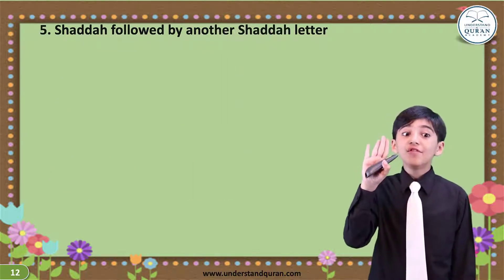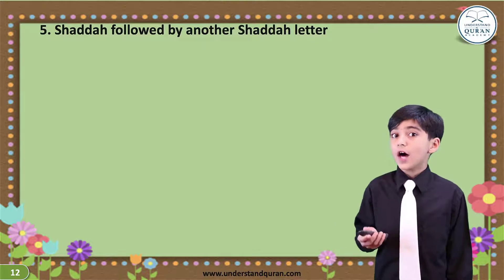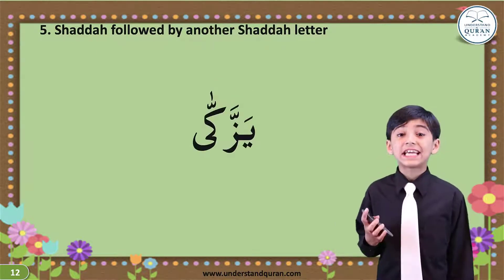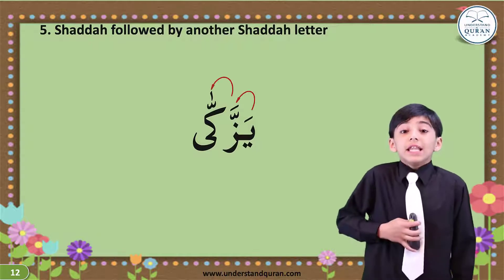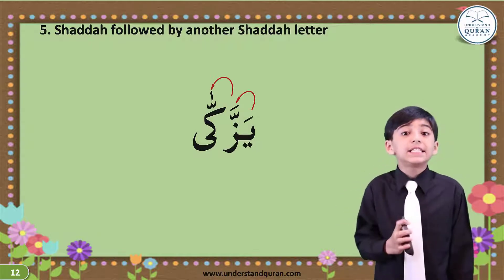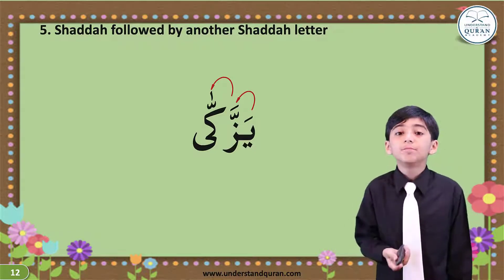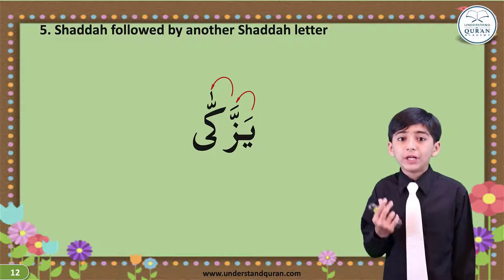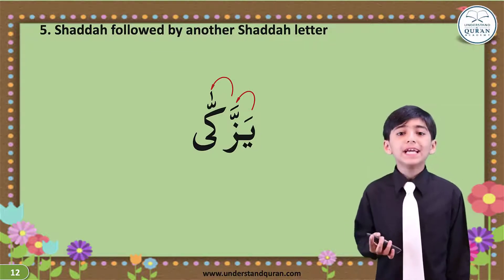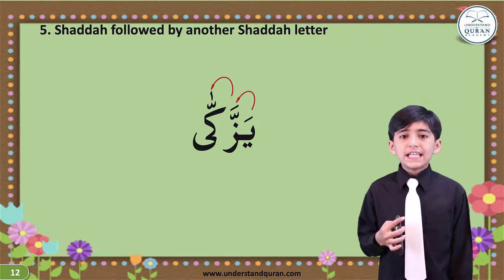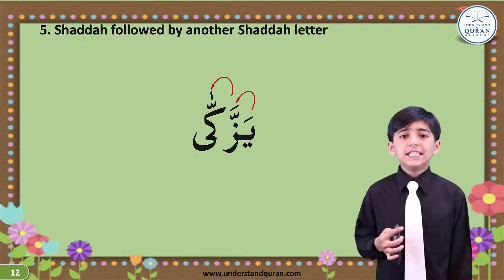Rule number 5: Shadda followed by another Shadda letter. So over here in Yazzakal, the Ya helps the Zaa, and the Zaa with Fatha helps the Kaf. Repeat after me twice: Yazzakaa, Yazzakaa. Yashakaa, Yashakaa, Yashakaa.